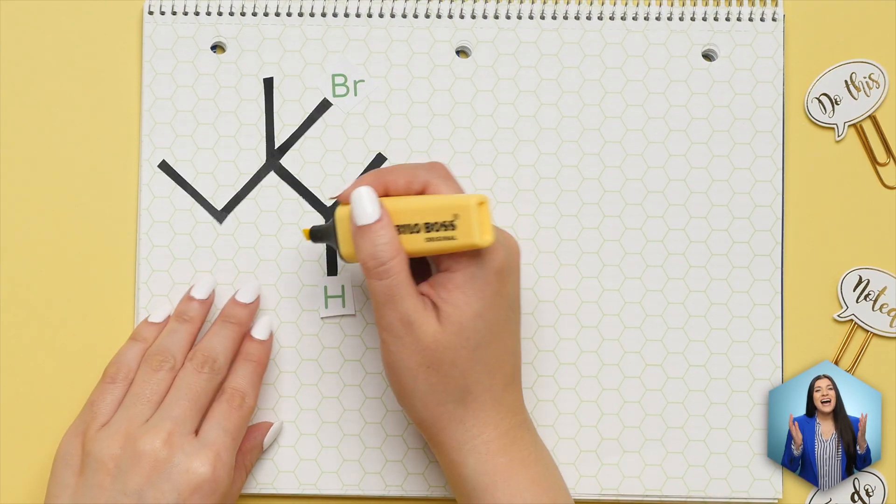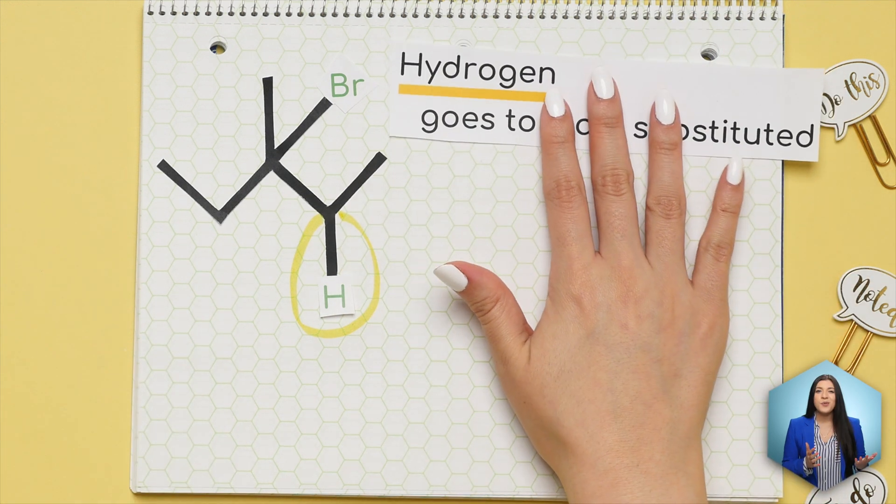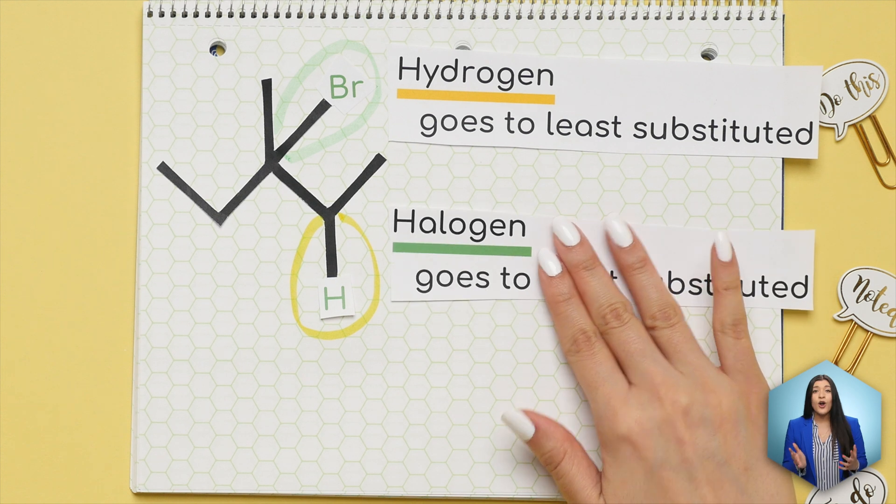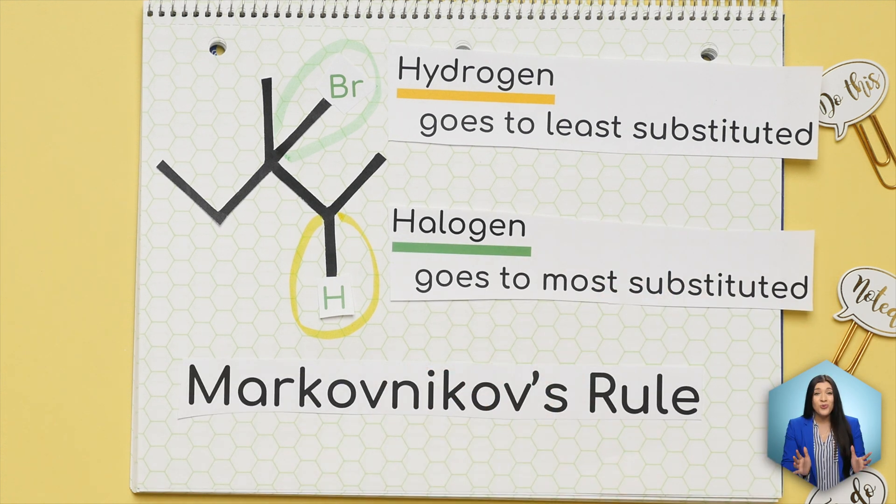If you notice the hydrogen went to the least substituted carbon and the halogen went to the most substituted carbon. This is Markovnikov's rule.